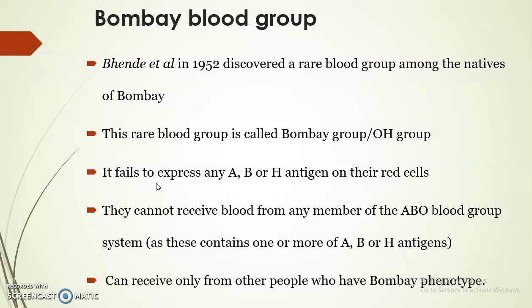The Bombay blood group fails to express A antigen, B antigen, and H antigen on their surface. They cannot receive blood from any members of the ABO blood group system; they can receive blood only from people of the same Bombay phenotype.